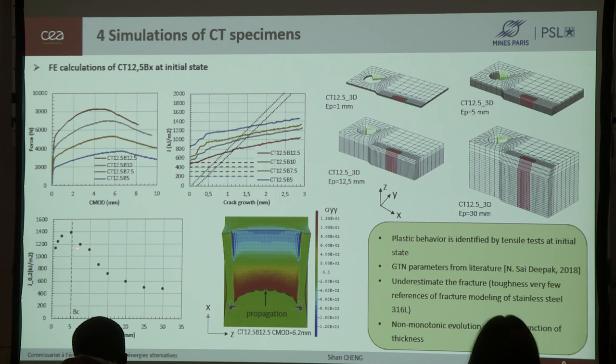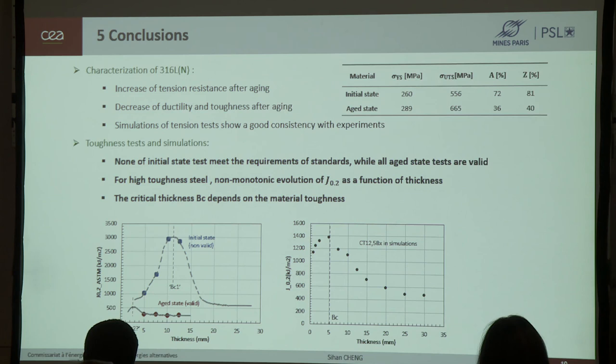If I recall, for the experiments at initial state, the critical thickness is between 10 and 12.5. Then, we have a decrease of fracture toughness when thickness decrease. That is to say, for simulation and experiments, we are at different parts of this curve.